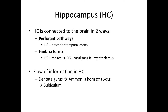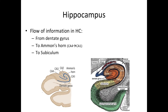To recap: the perforant pathway connects the hippocampus to the posterior temporal cortex, and the fimbria fornix connects it to the thalamus, prefrontal cortex, basal ganglia, and hypothalamus. Input from the neocortex goes into the dentate gyrus, which projects to Ammon's horn, and specifically CA1 projects to the subiculum — which is not part of the hippocampus but is part of the hippocampal formation. The hippocampus itself consists of the dentate gyrus and CA4, CA3, CA2, and CA1.